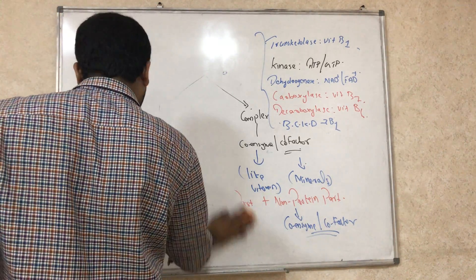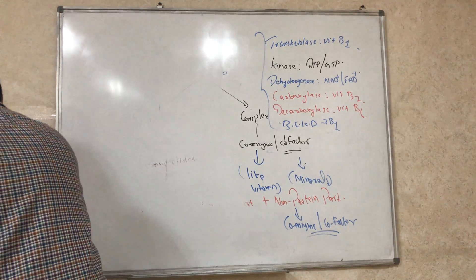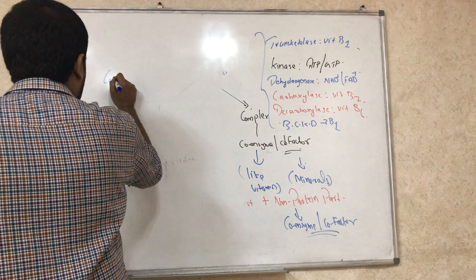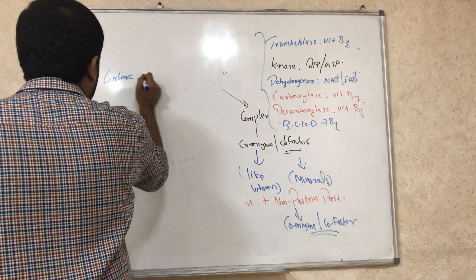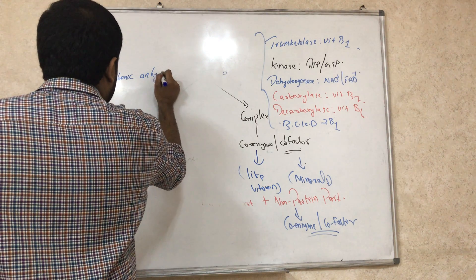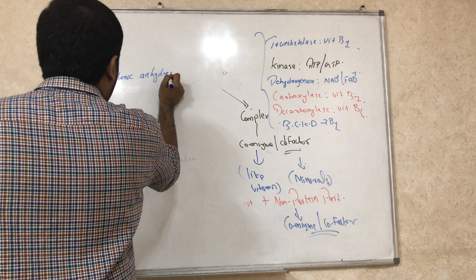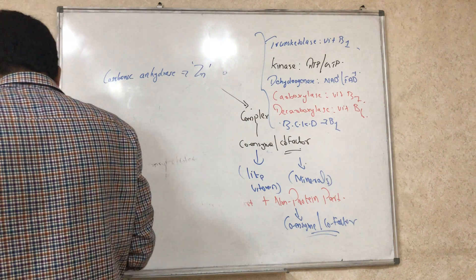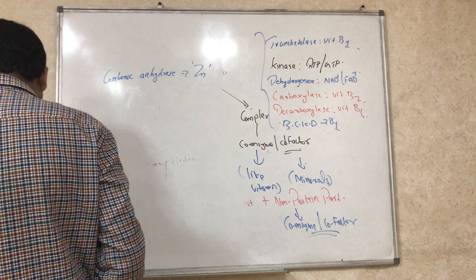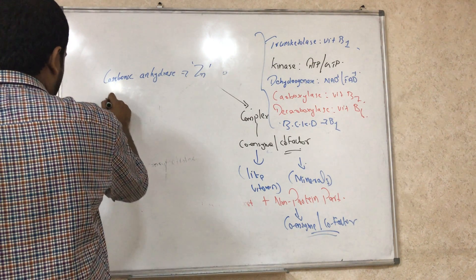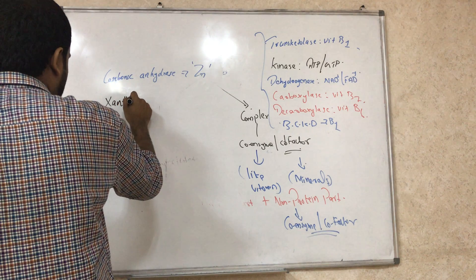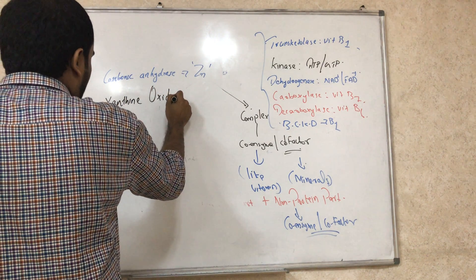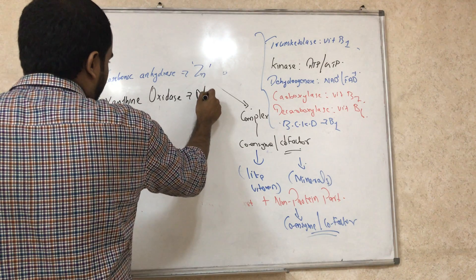Now for cofactors — these are minerals. Carbonic anhydrase has zinc as its cofactor. Xanthine oxidase, which is involved in uric acid formation in gout disease, has molybdenum as its cofactor.